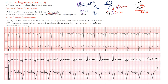In V1, we look at the terminal portion of the P wave, which represents left atrial depolarization. What you want is a terminal deflection that is at least 1 millimeter wide and 1 millimeter deep. That's a simple rule of thumb.